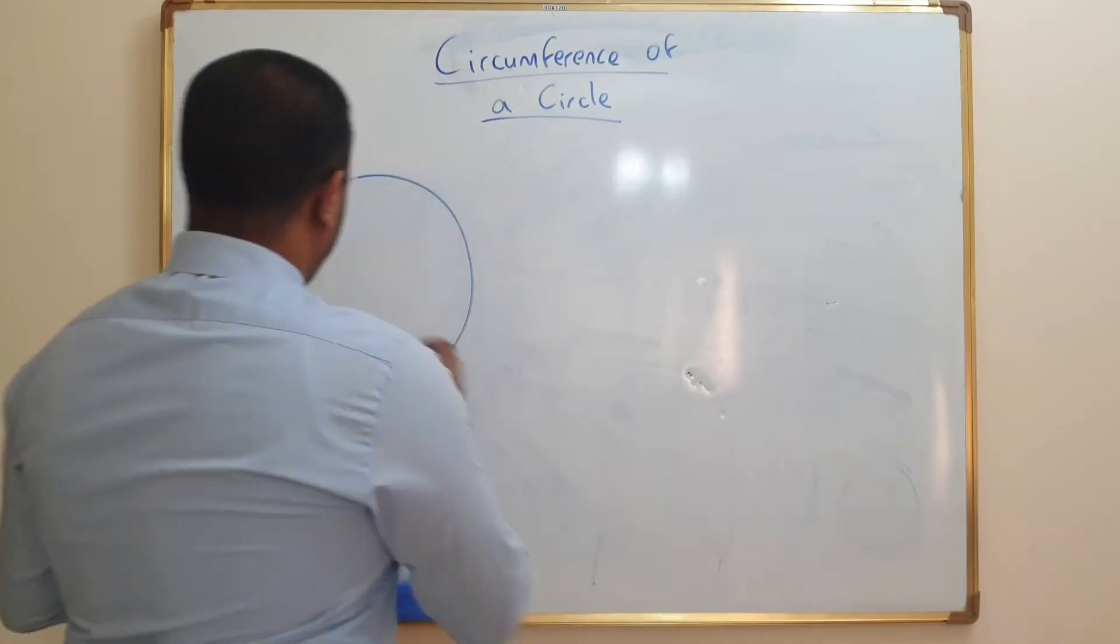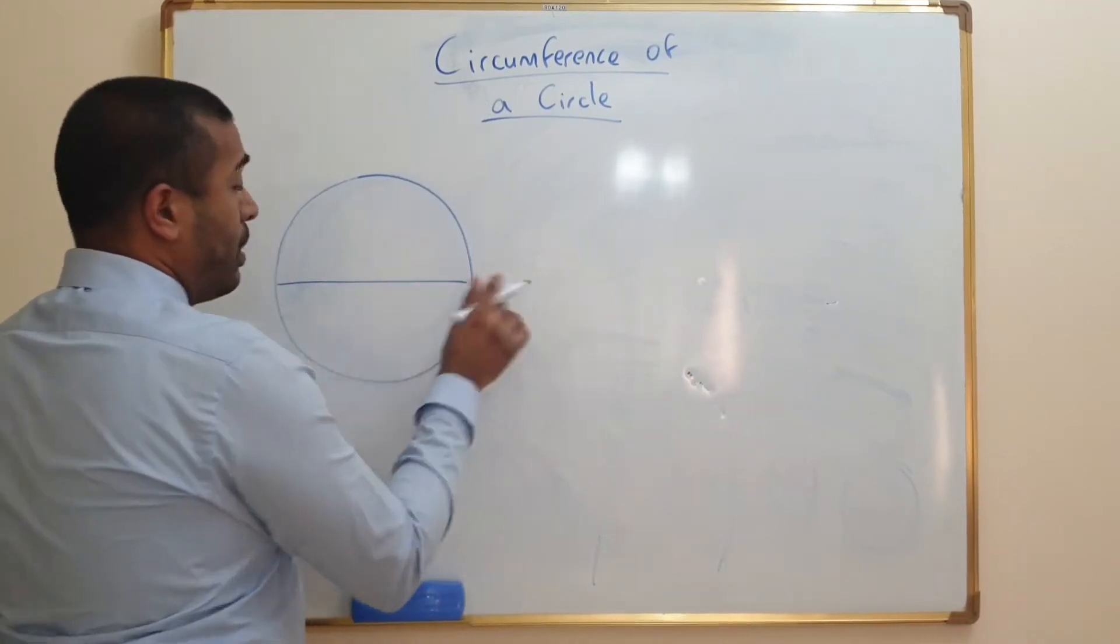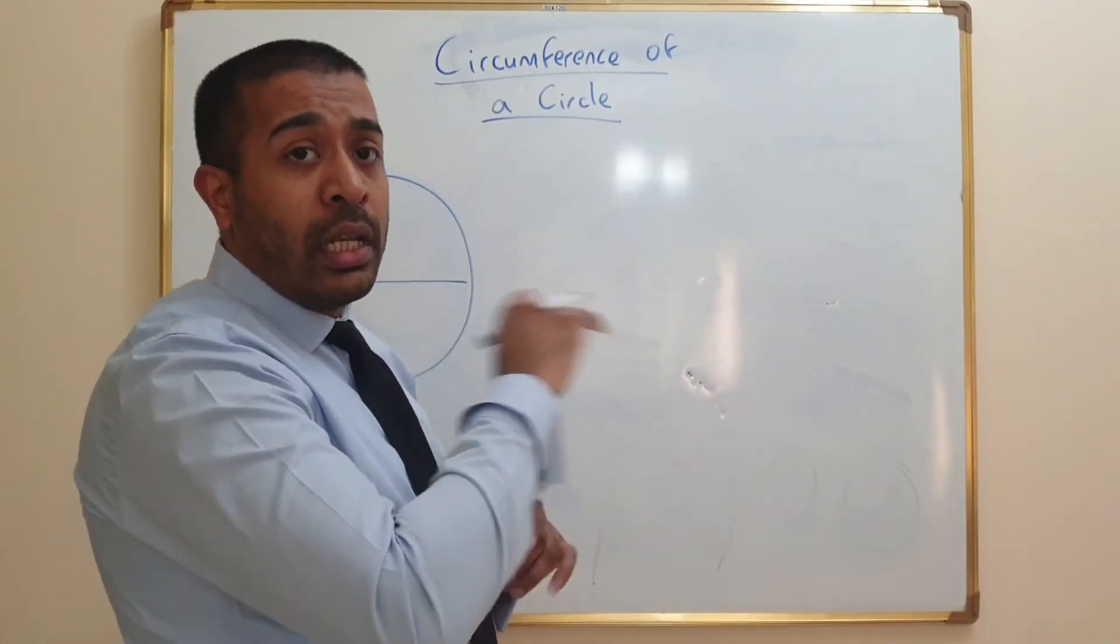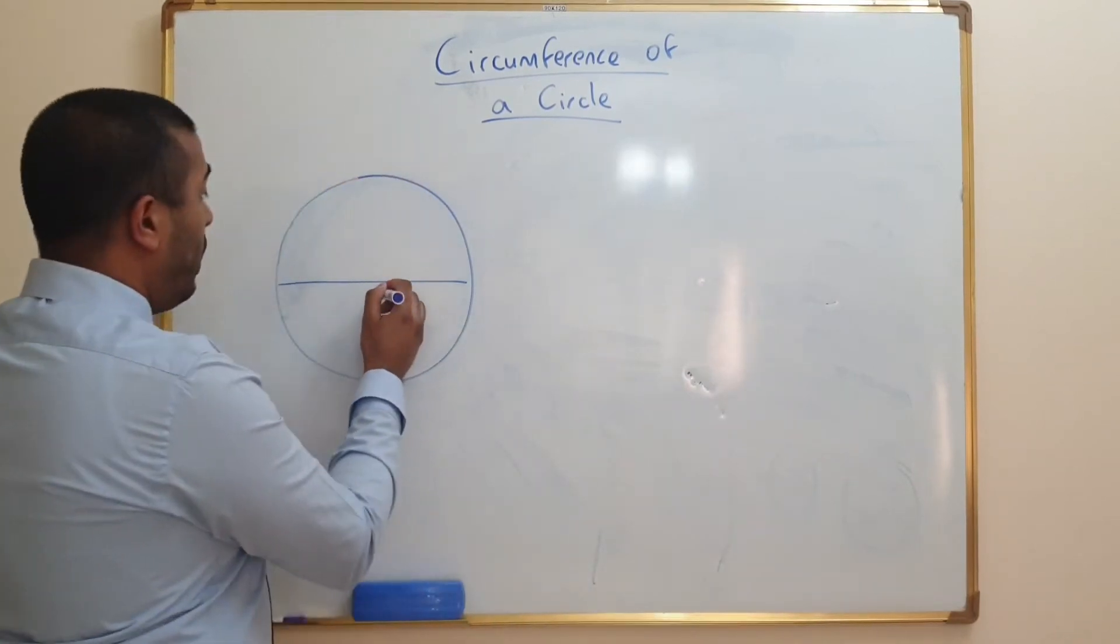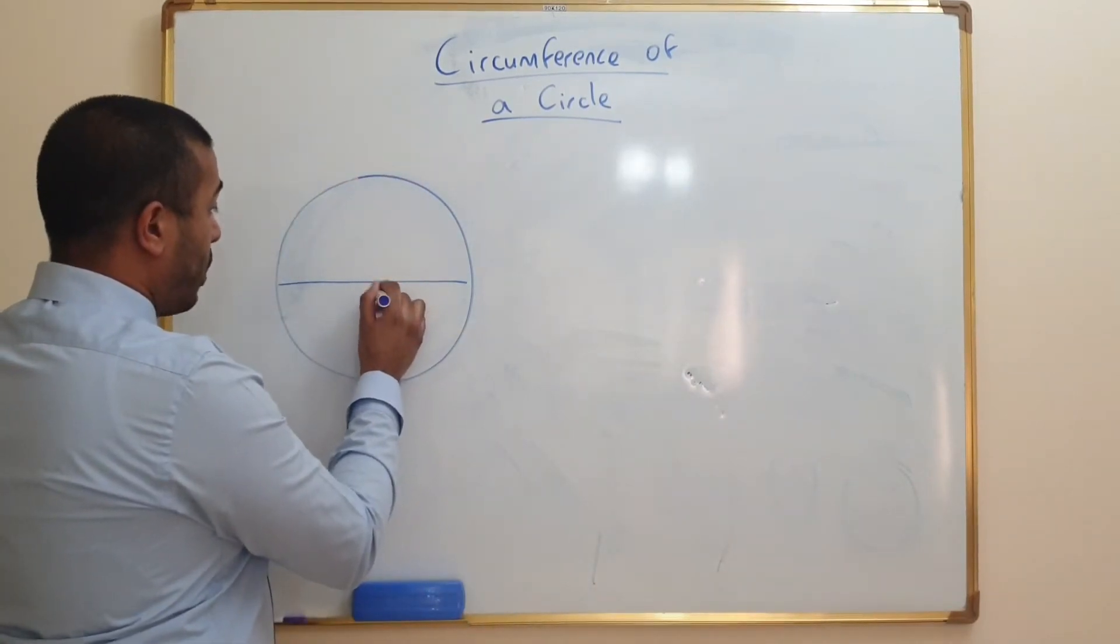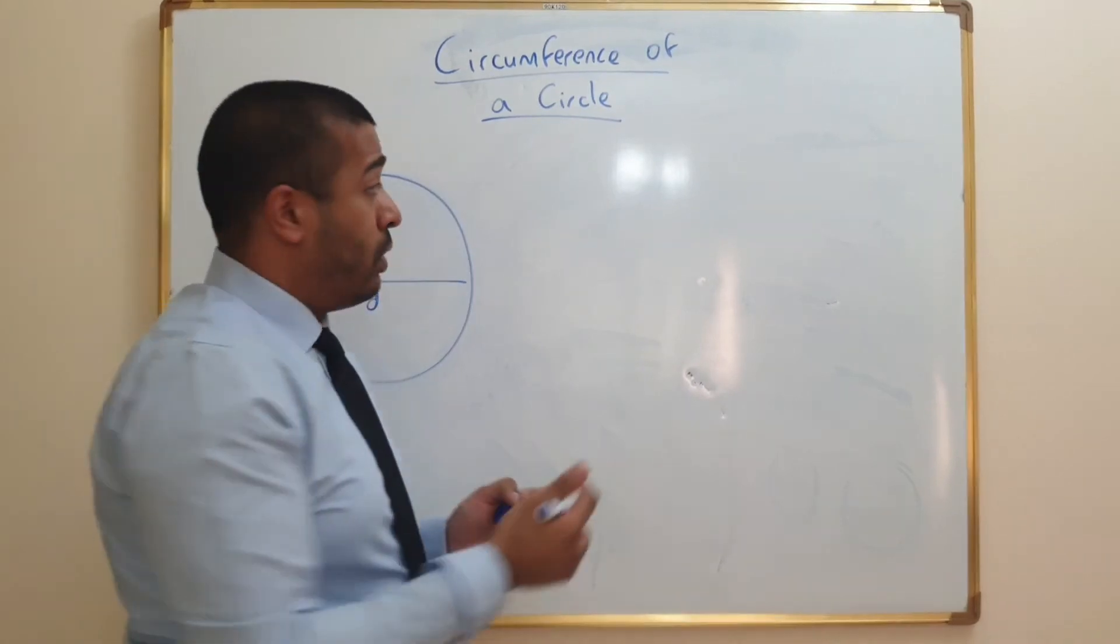All we need to know is the diameter. The diameter goes from one end of the circle, through the center, to the other end. If we know the diameter, we are able to work out the circumference.